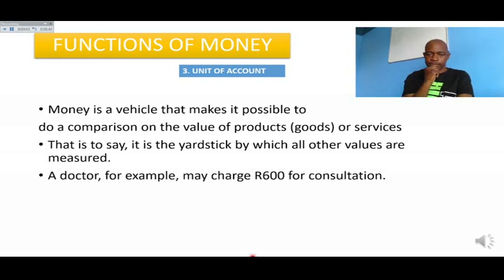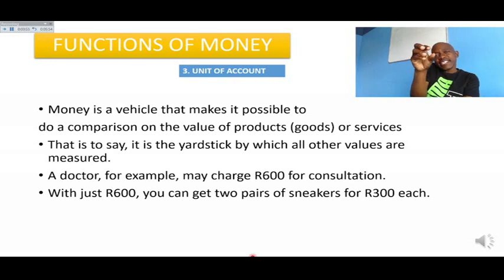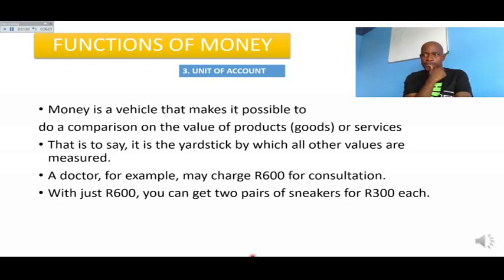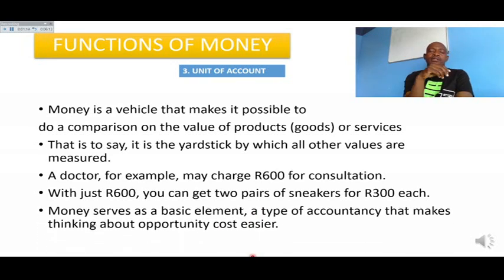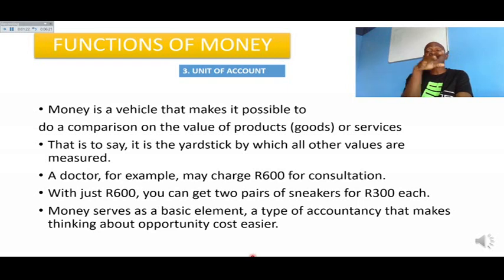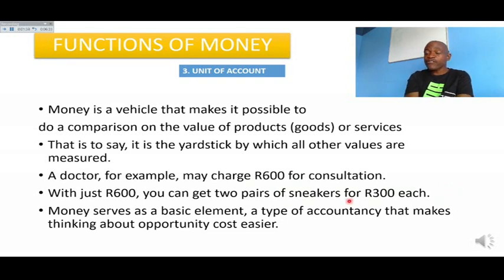A doctor, for example, may charge 600 rand for a consultation. With that 600 rand you can get two pairs of sneakers at 300 rand each. The doctor's service is 600 rand, but with the same 600 rand you can buy two pairs of sneakers. Money serves as a basic element that makes thinking about opportunity costs easier. The opportunity cost of going to the doctor is two pairs of sneakers, and the opportunity cost of two pairs of sneakers is a 600 rand consultation.